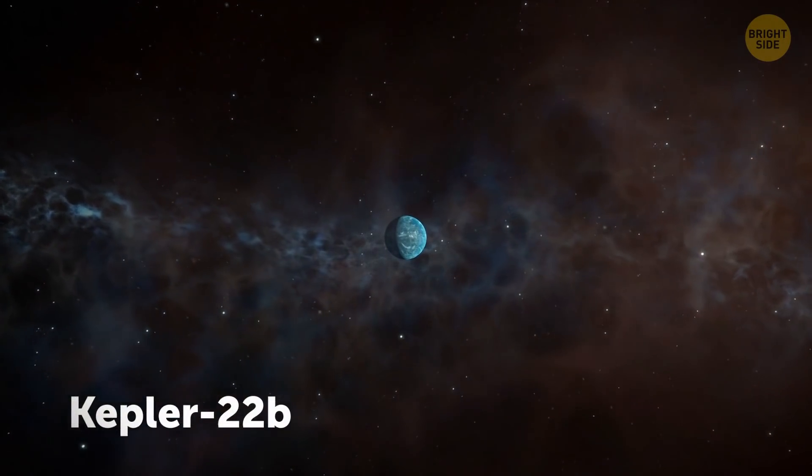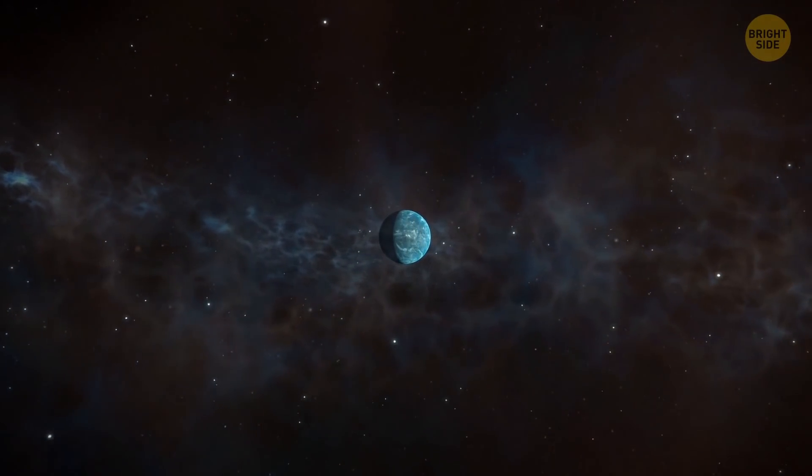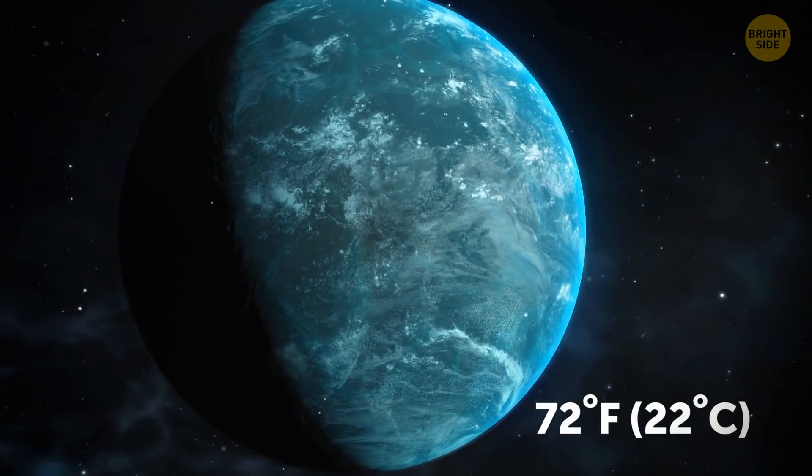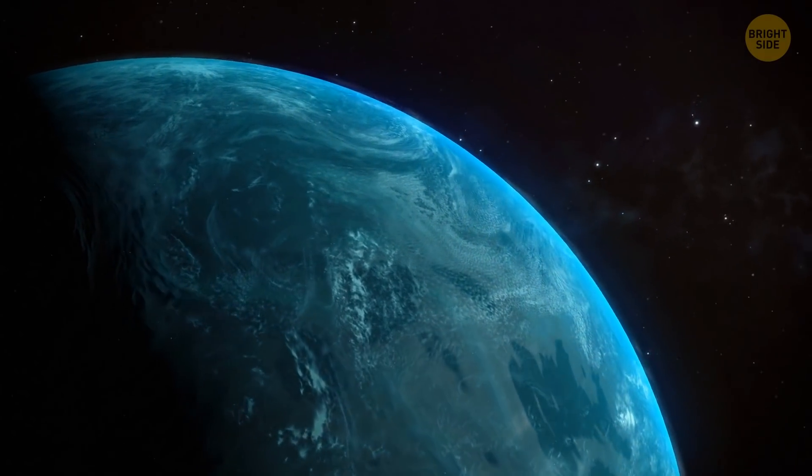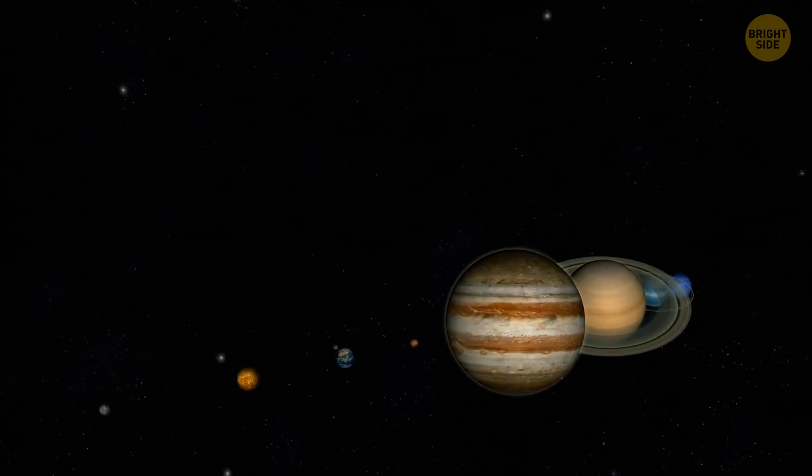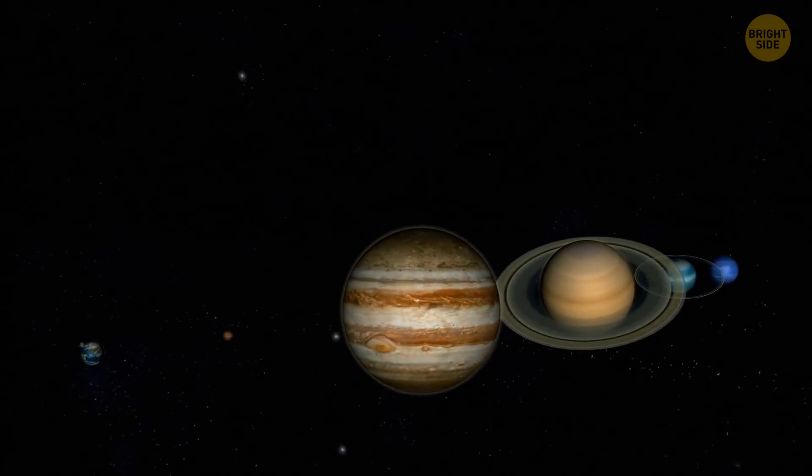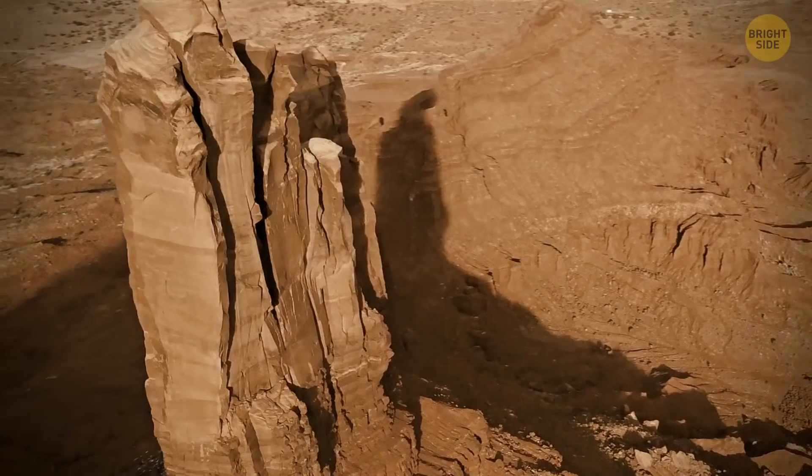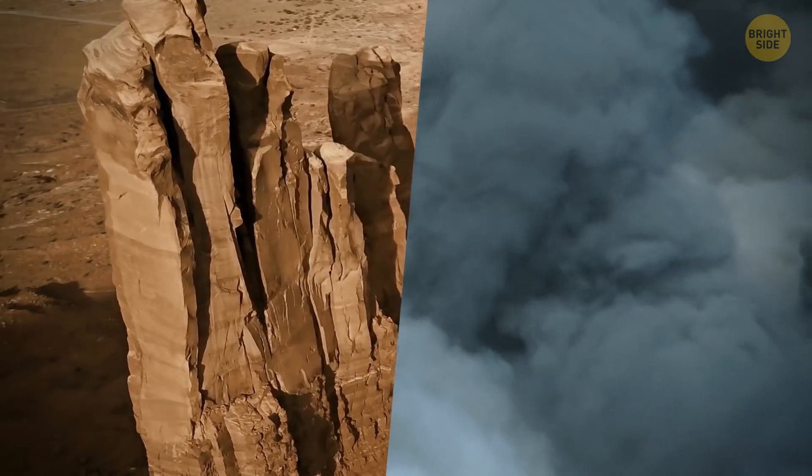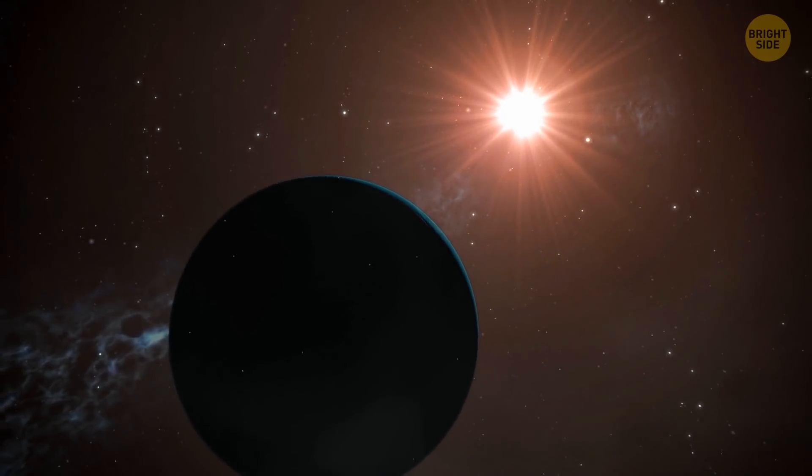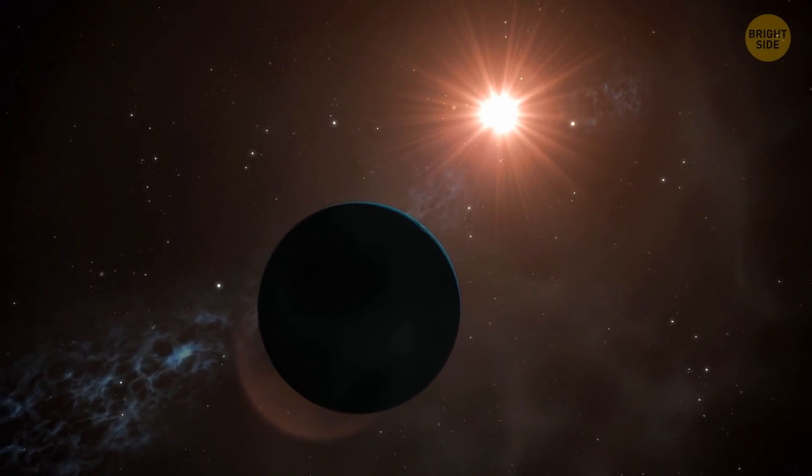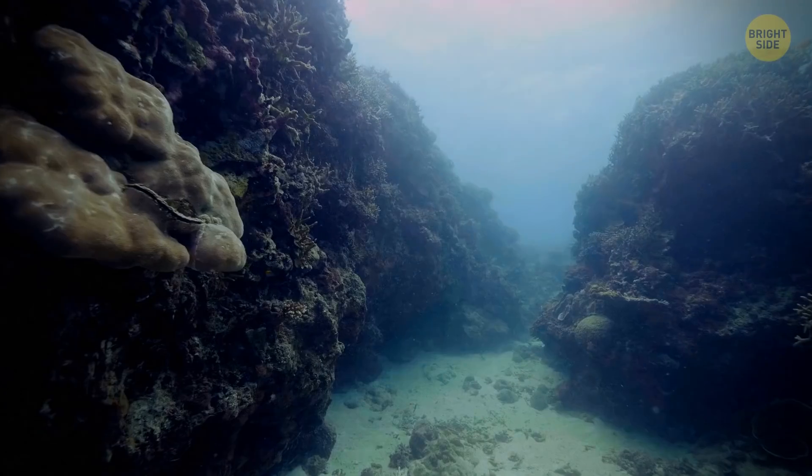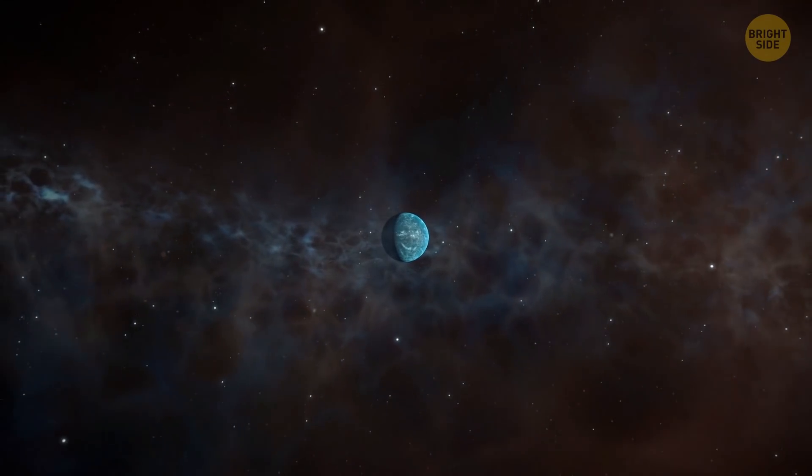But meet Kepler-22b, one of our most promising findings. It's 600 light-years away from us, twice bigger than our planet, and with temperatures of about 72 degrees Fahrenheit. This is a so-called super-Earth. It's a category of planets unlike any we have in the solar system. They're more massive than Earth, but still lighter than ice giants, such as Uranus or Neptune. Super-Earths can consist of rock, gas, or a mixture of these two. Kepler-22b is within the habitable zone of its parent star, which is less bright than our sun. The planet probably has a rocky core. It may have an ocean, but it doesn't host any life. At least, we don't know about it yet.